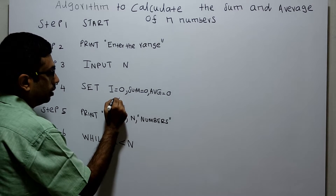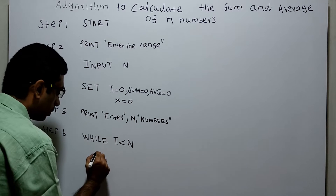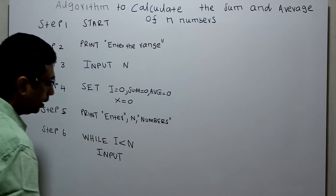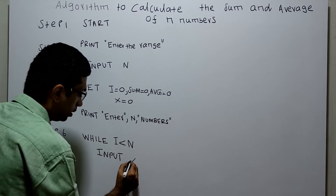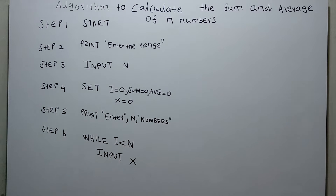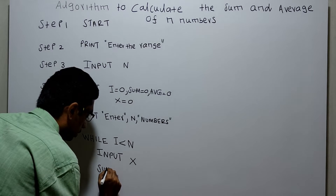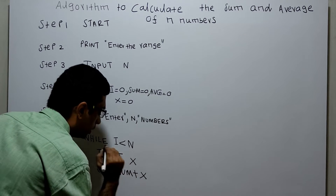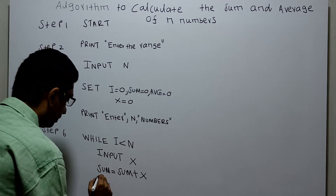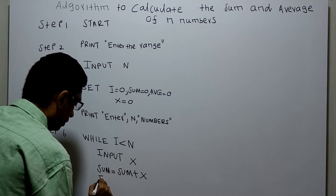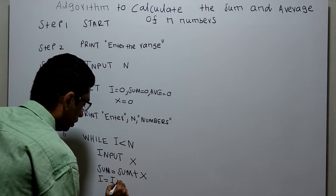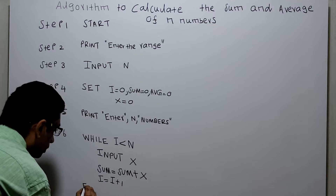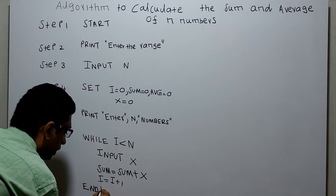Step 6: I am choosing another variable x equal to 0 and getting a number as input — input x. I am storing the value of x in sum: sum equal to sum plus x. Then I am incrementing i: i equal to i plus 1. And this is end-while — the end of the loop.